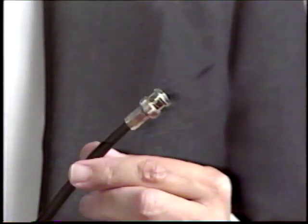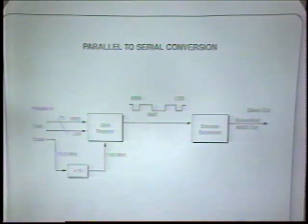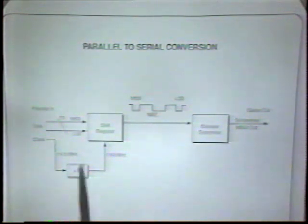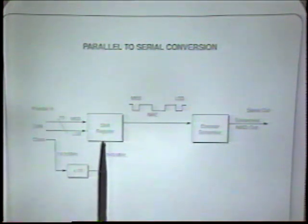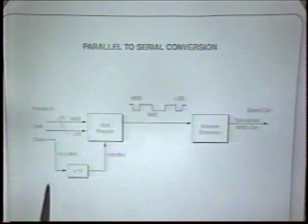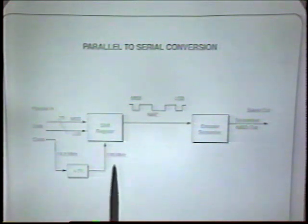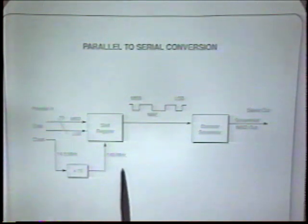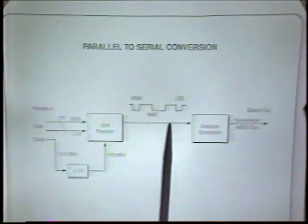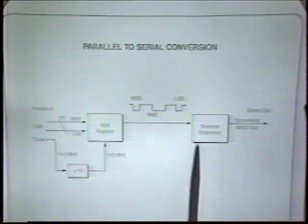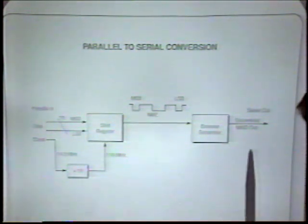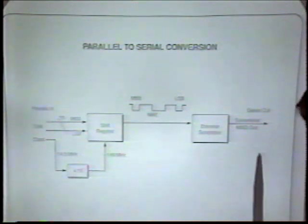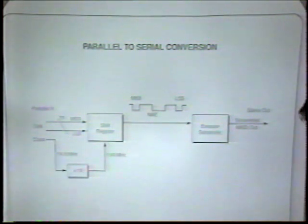This chart is a simplified block diagram of parallel-to-serial conversion. The parallel data comes into a shift register. The 14.3 megahertz clock is multiplied by 10, giving a 143 megahertz clock frequency, and then the data is shifted out least significant bit first. It then goes through an encoder and a scrambler, which give you an output of scrambled NRZI as per the proposed standard. The reason we need NRZI has to do with the transmission channel and recovering the clock.